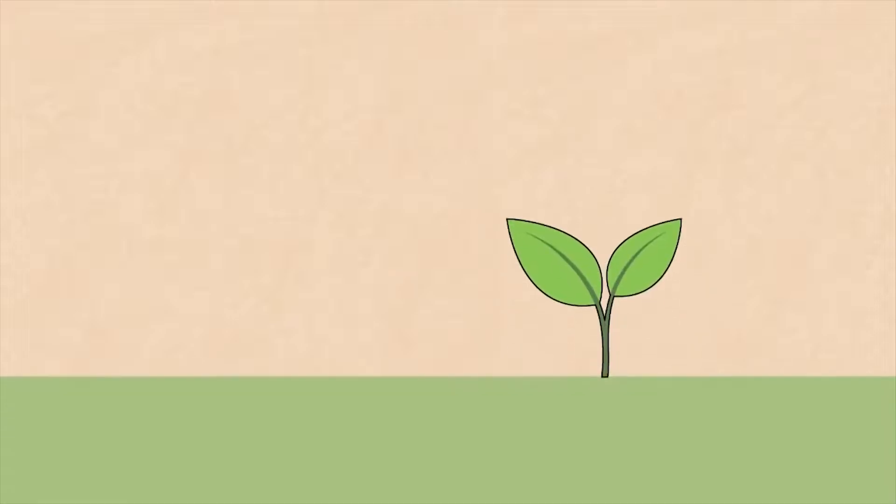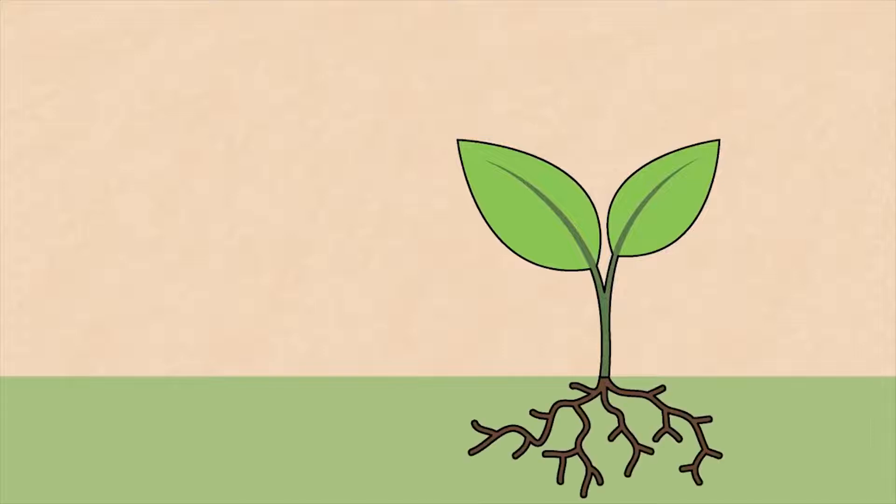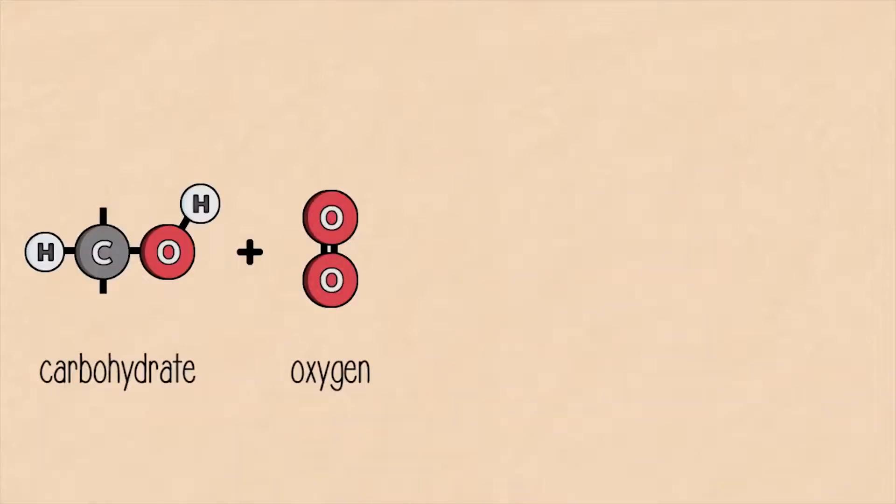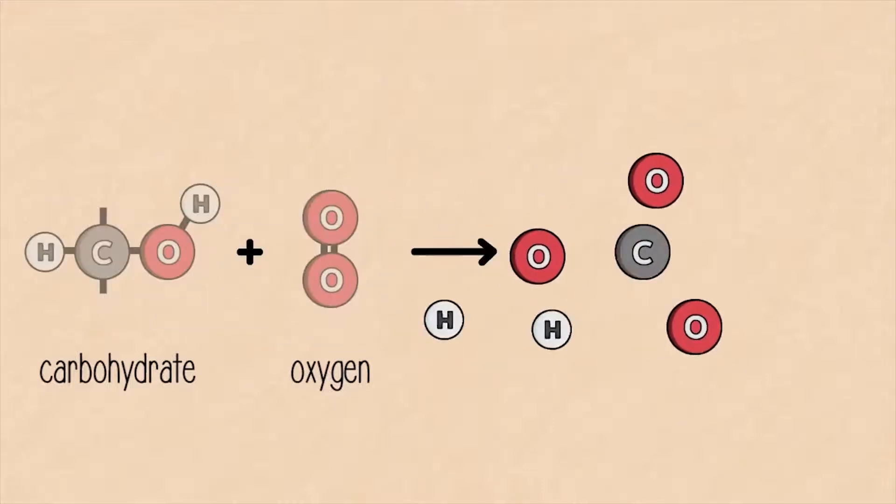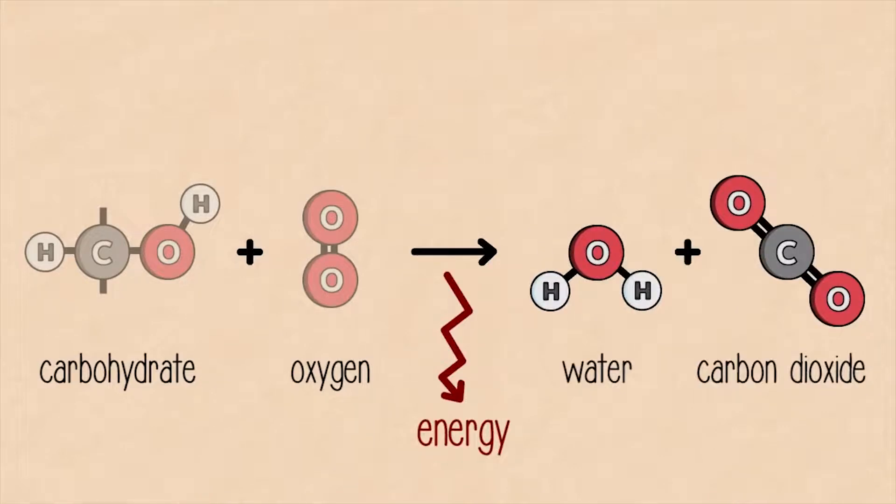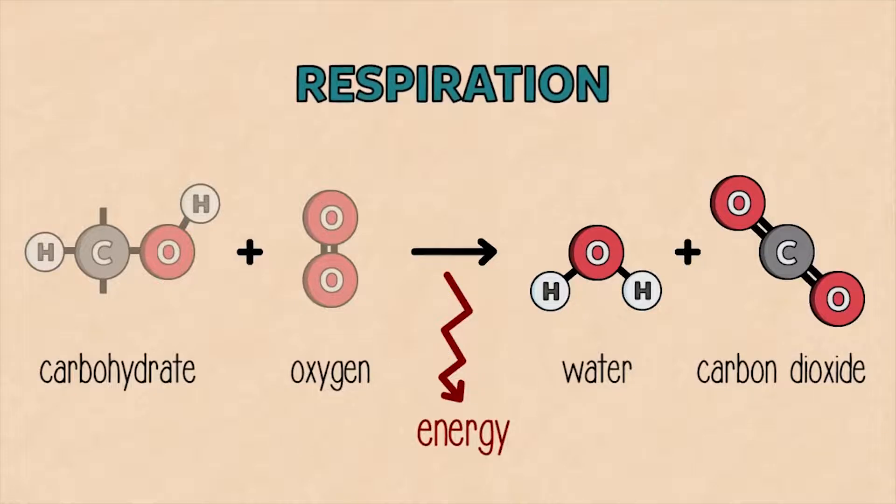Energy is now stored, and living things can use the carbohydrates to build their bodies and structures. To obtain energy, they simply reverse this reaction, letting the oxygen and the carbohydrate rejoin, forming carbon dioxide and water all over again. And this is respiration.